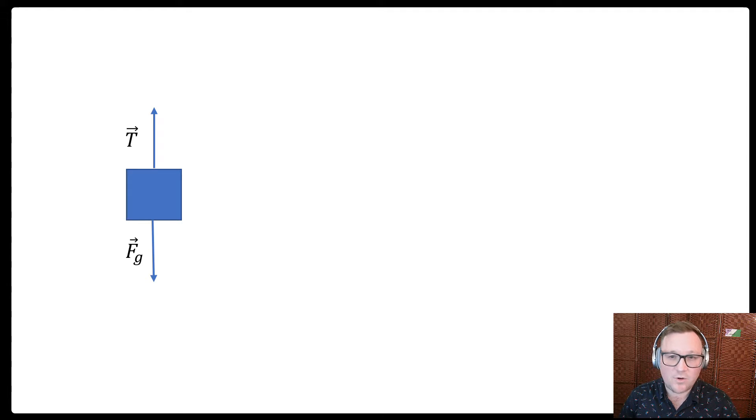Consider a system where we're holding an object with a string, and this would be the free body diagram for that. It has the force of gravity pointing down, and the tension pointing up. We're applying this tension upward to oppose the gravity.